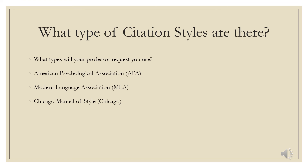What type of citation styles are there? Make sure and use the citation style your professor requests when doing your bibliography. The three most common styles are the American Psychological Association, known as APA, Modern Language Association, known as MLA, and Chicago Manual of Style. APA is most commonly used in the social and behavioral sciences. MLA is used by the humanities. Chicago Manual of Style is most frequently used by Business, History, and Fine Arts. There are over 200 different citation styles, but we are only going to cover these three because they are the most frequently used. If you are required to use a different style, we suggest visiting the library for assistance in proper formatting.